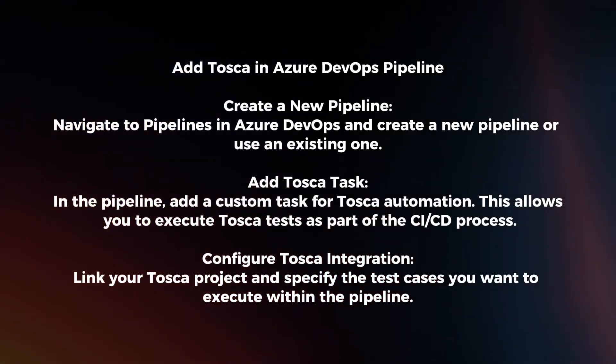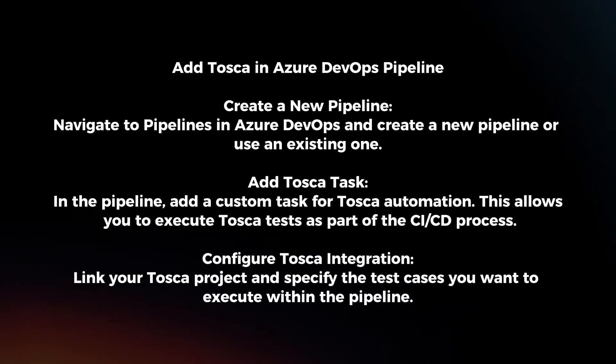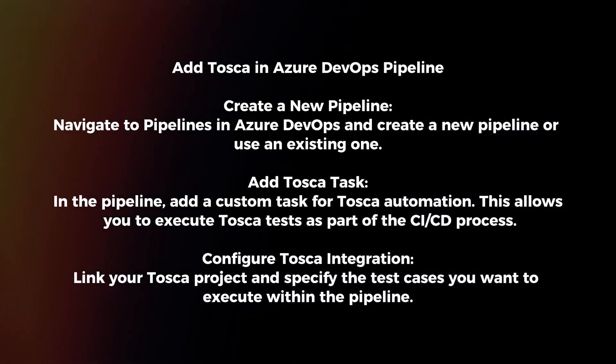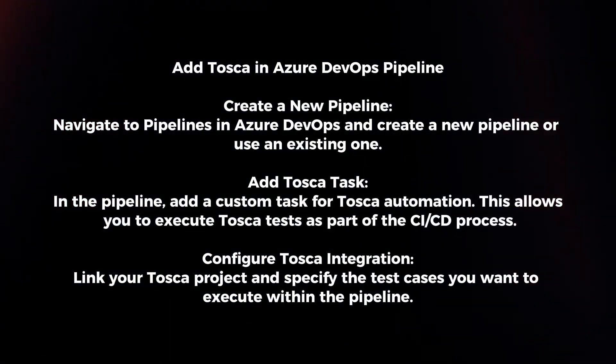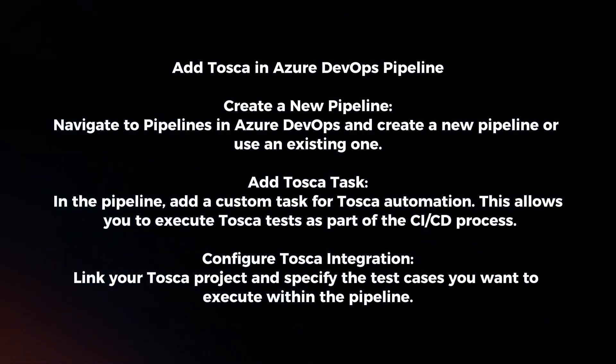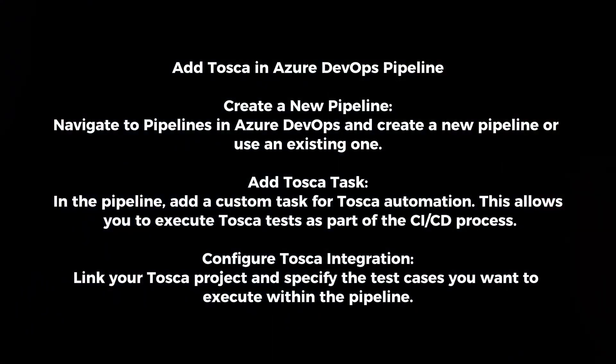Add Tosca in the Azure DevOps pipeline. Create a new pipeline by navigating to Pipelines in Azure DevOps and creating a new pipeline or using an existing one. Add a custom task for Tosca automation, which allows you to execute Tosca tests as part of the CI/CD process. Then configure the Tosca integration by linking your Tosca project and specifying the test cases you want to execute within the pipeline.